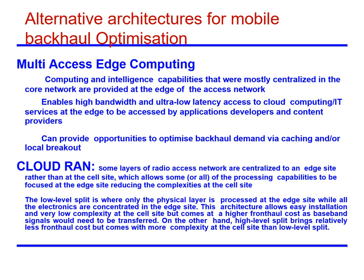Alternative architectures for mobile backhaul optimization include Multi-access Edge Computing (MEC). Computing and intelligence capabilities that were mostly centralized in the core network are provided at the edge of the access network. This enables high bandwidth and ultra-low latency access to cloud computing or IT services at the edge, accessible by application developers and content providers, and can provide opportunities to optimize backhaul demand via caching or local breakout.